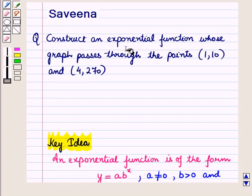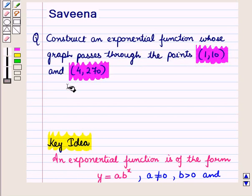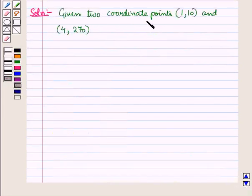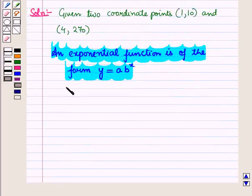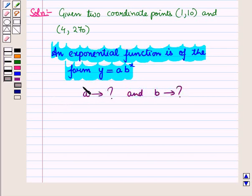Now let us start with the solution. We are given that an exponential function passes through the points (1, 10) and (4, 270), and we have to write it in the form y = a · b^x. So we need to find the values of a and b and substitute them back into this equation.